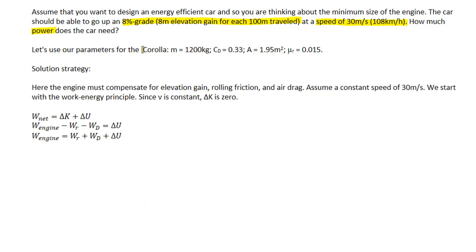We will also use the parameters of a Toyota Corolla as an example which I will also highlight here. These parameters are important because we know that a car is subject to rolling friction and drag. In this case we also need to think about potential energy because the car is going uphill.